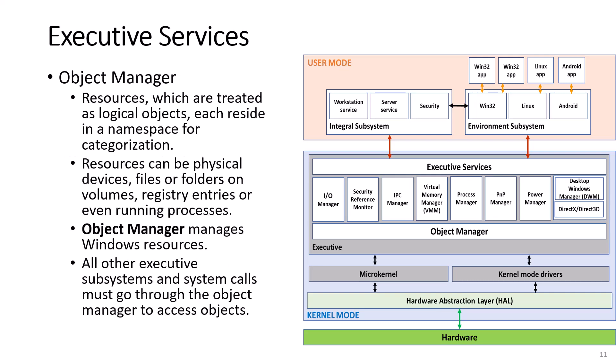Resources, which are treated as logical objects, each reside in a namespace for categorization. Resources can be physical devices, files or folders on volumes, registry entries, or even running processes. Object Manager manages Windows resources. All other executive subsystems and system calls must go through the Object Manager to access objects.